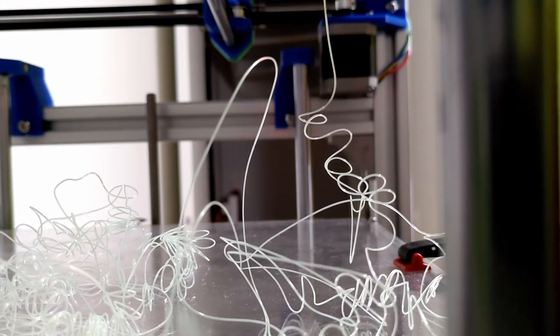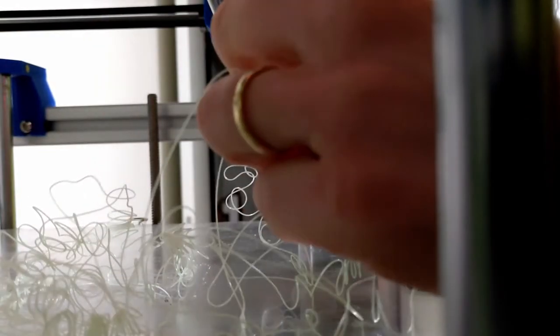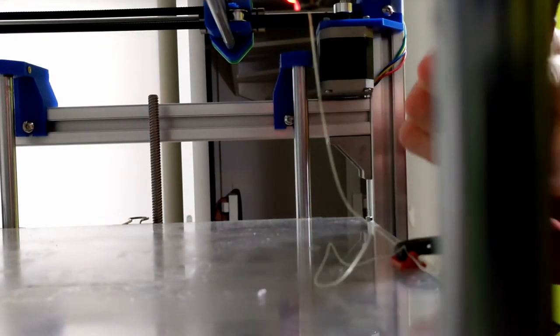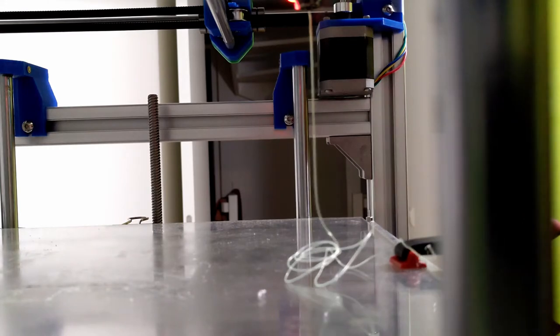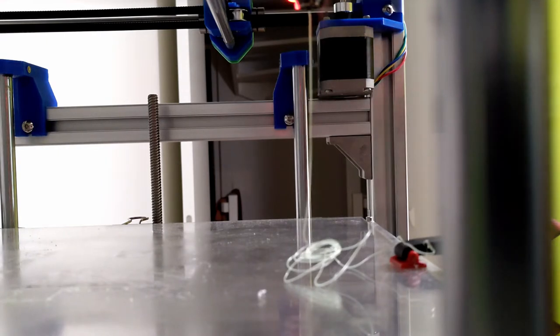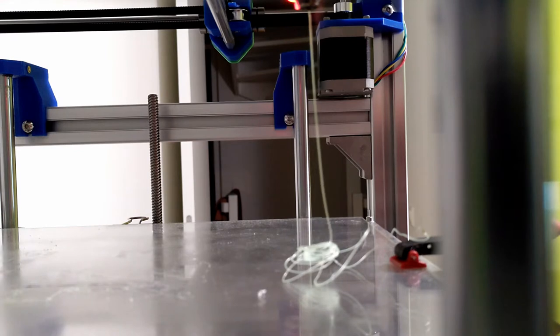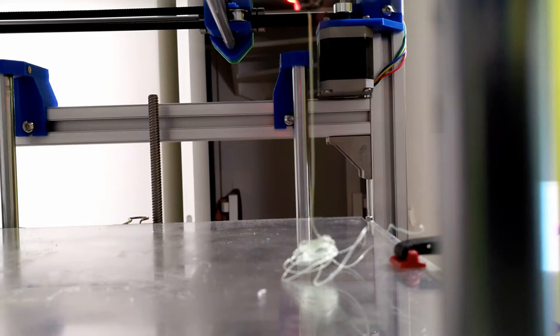At each speed the filament extruded is 25 centimeters. The printer has moved to the second position and the extrusion speed now is twice what it was before.